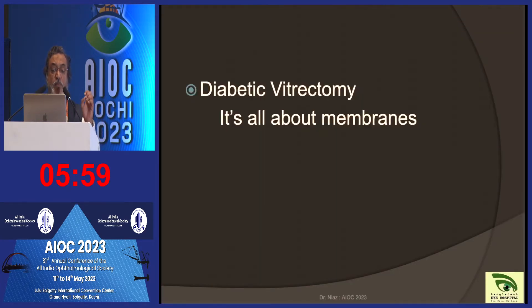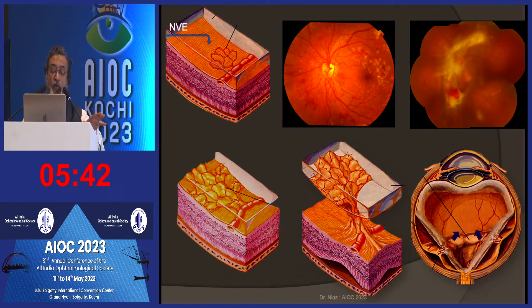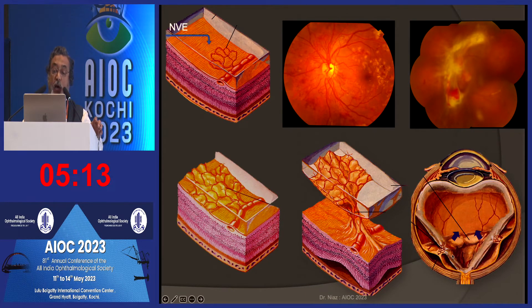Diabetic vitrectomy is all about membranes. When the new vessels form, they are on the surface of the retina. Gradually, fibrovascular tissue proliferation occurs and it becomes a fibrovascular membrane, which sticks to the posterior hyaloid face. Once there is a PVD, as it is anchored to the retinal blood vessels, you start having a traction retinal detachment. Surgeons must understand the pathoanatomy — where to dissect the posterior hyaloid, how to get into the planes, and how to find the planes for a successful surgery.